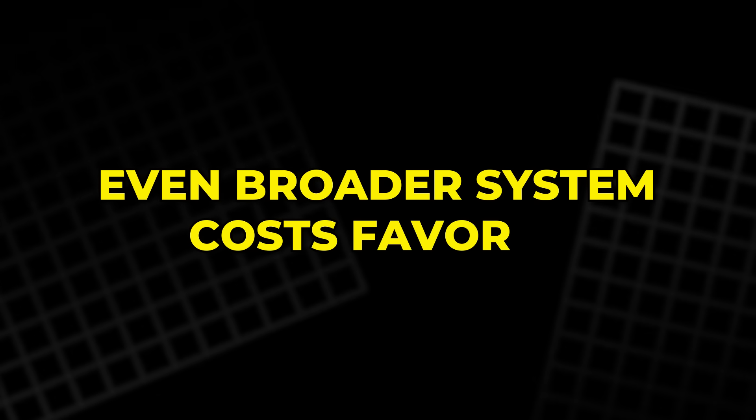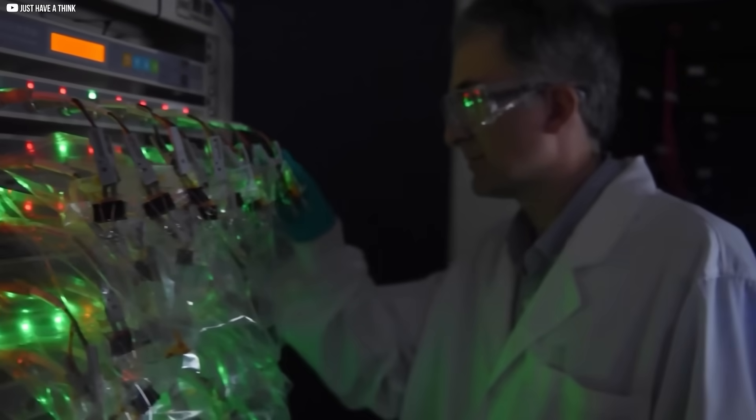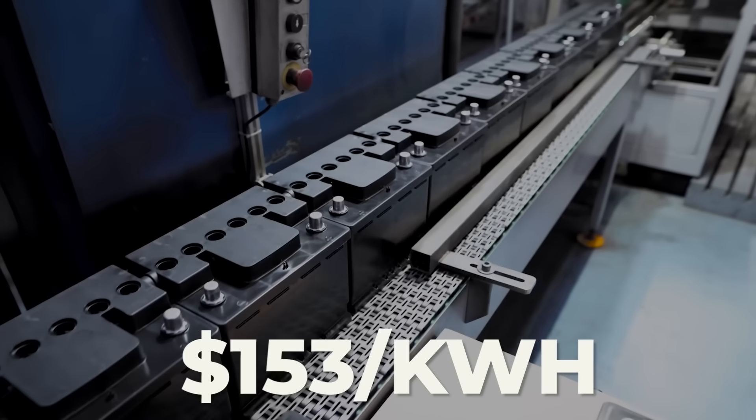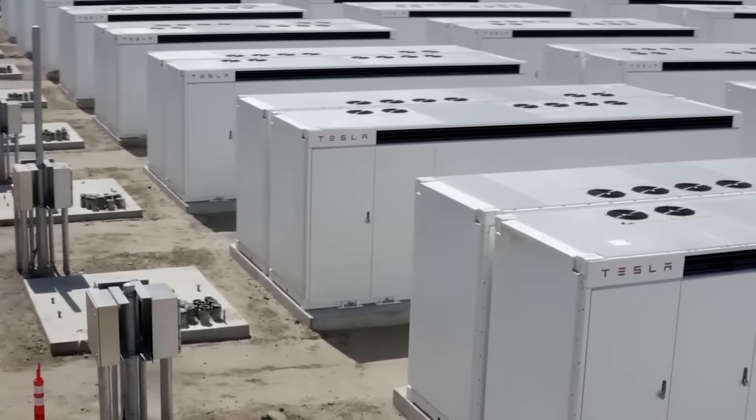Even broader system costs favor it. A 2021 analysis found zinc bromine batteries averaging $153 per kilowatt hour in material costs, far below vanadium at $491.